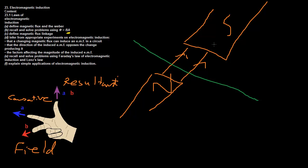What you have to realise is that the wire doesn't know if it's moved up or the magnet's moved down. So you can either move the magnet or you can move the wire, and both of those will cause magnetic flux to occur. But let's take a look at which ways the wire can and can't move in order to induce flux.